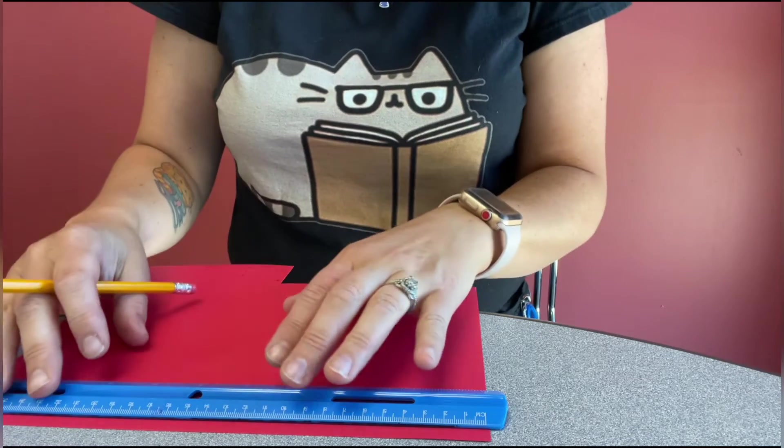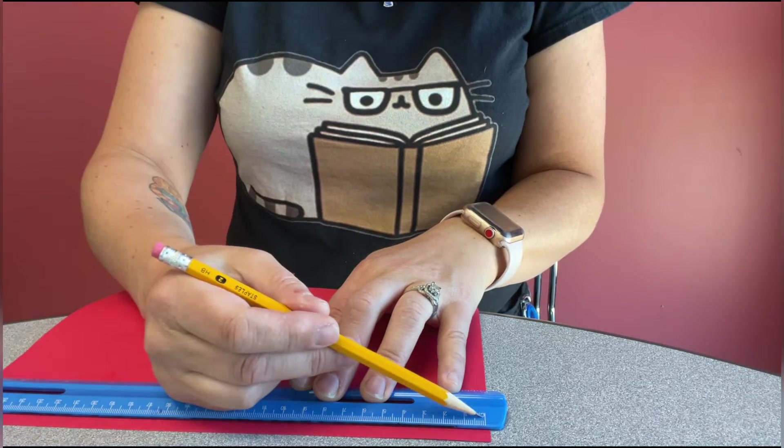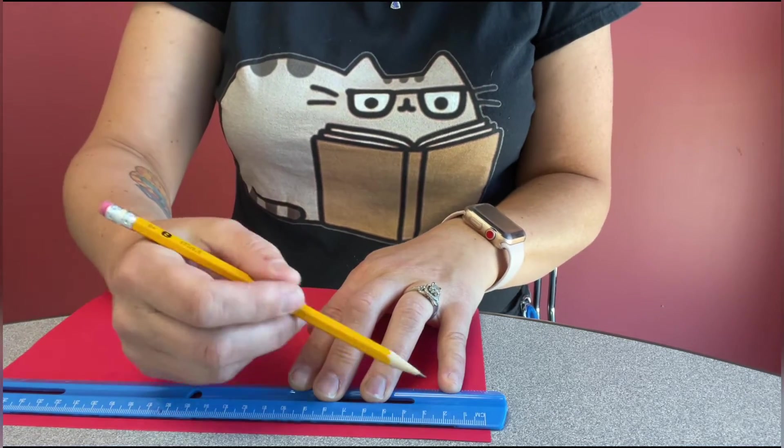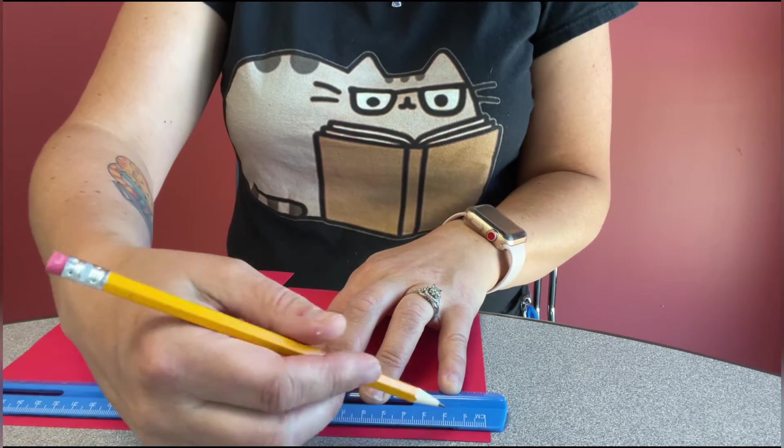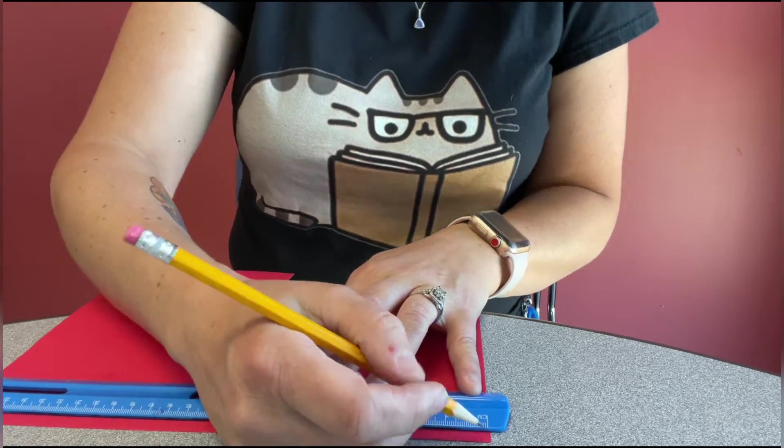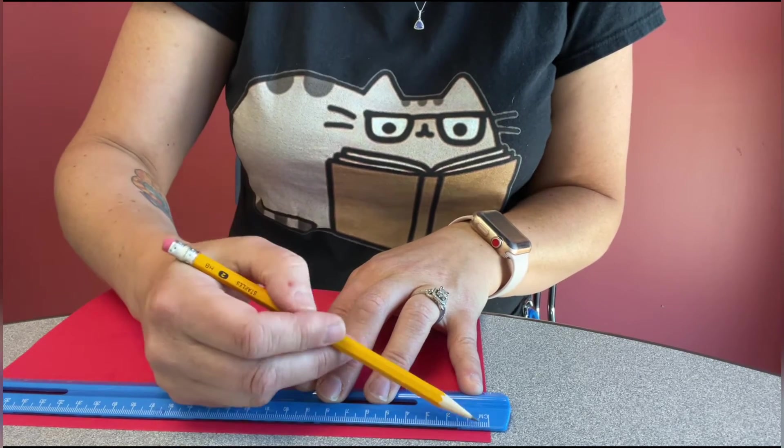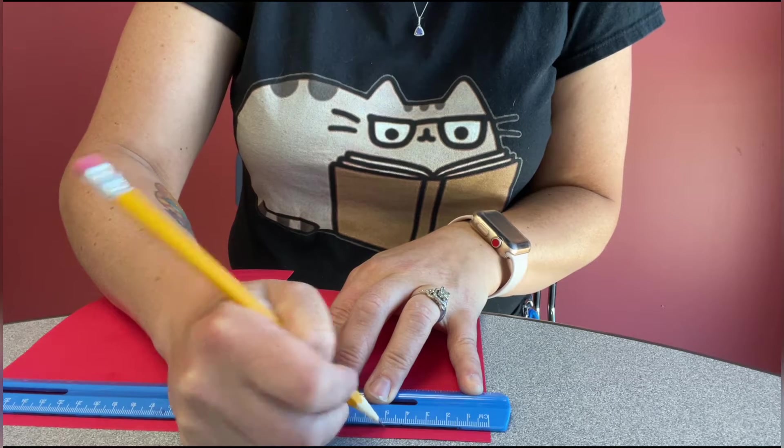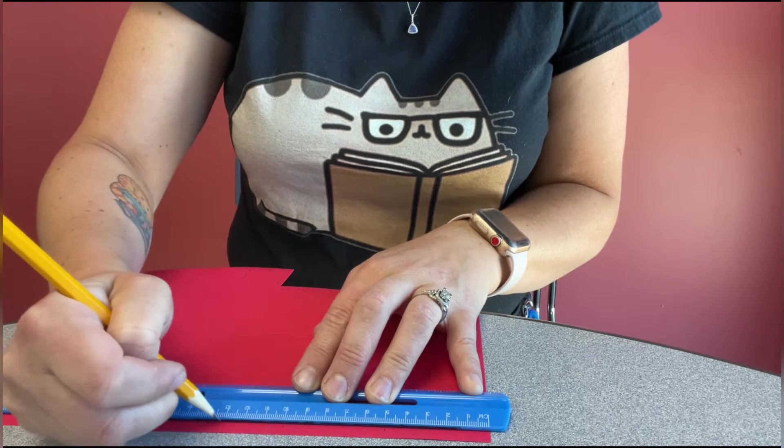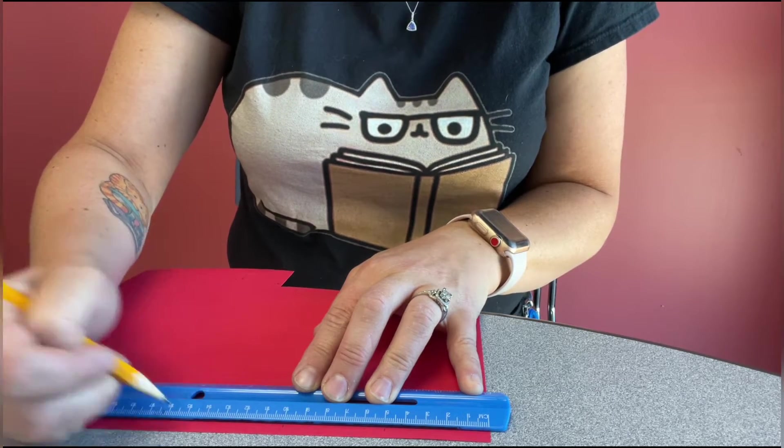With your ruler you need the centimeter side and you are going to mark off on the long part of your paper every five centimeters. So I need to make sure I have my ruler lined up with the edge and then I'm going to mark at five, ten, and then 15.